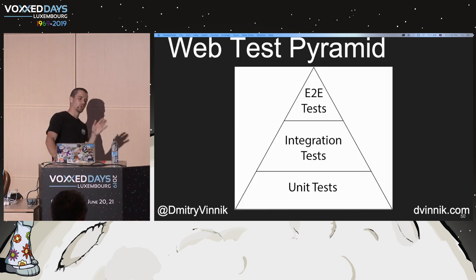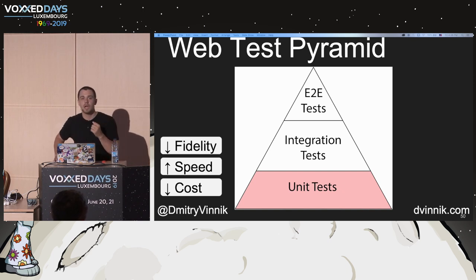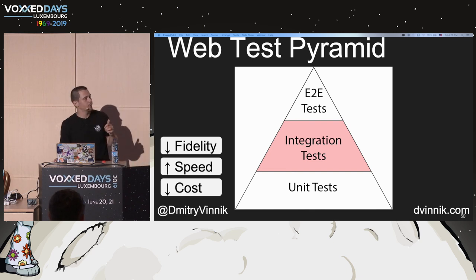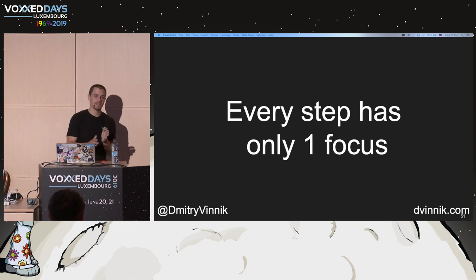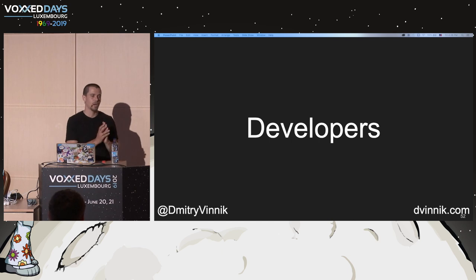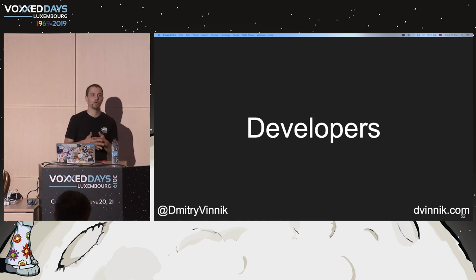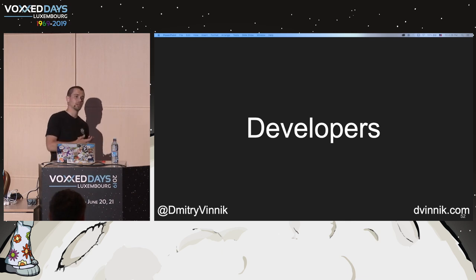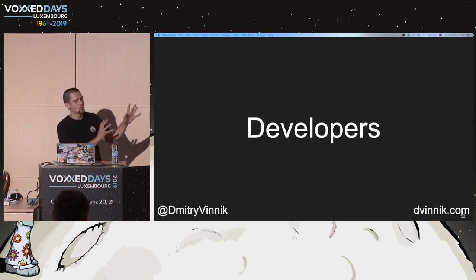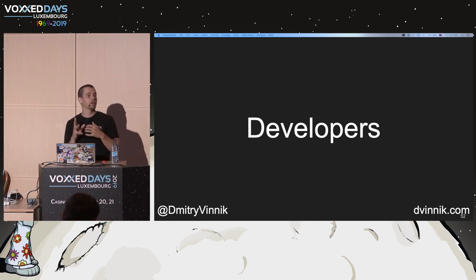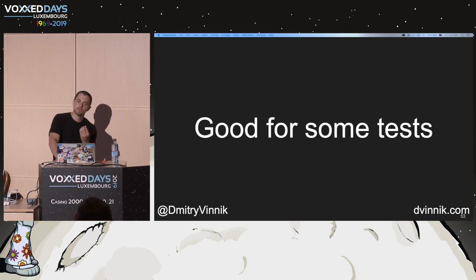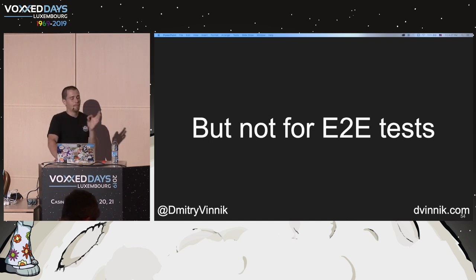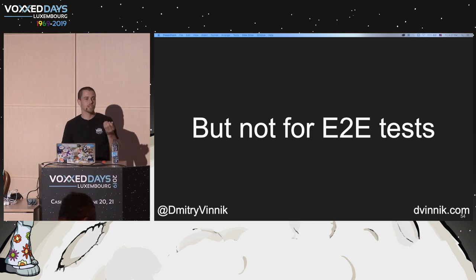Both unit and integration test levels had one focus: developers. They're mostly giving quick feedback to your developers. For end-to-end tests, the focus should be slightly different — it's the user. End-to-end tests are the costliest, slowest, but give you the highest level of fidelity because it's real customer use cases we are testing. An important idea: you're supposed to shift focus — don't just do it for developers' sake anymore. On this level, it's all about the customers.